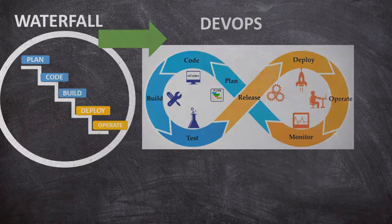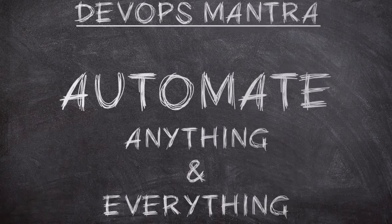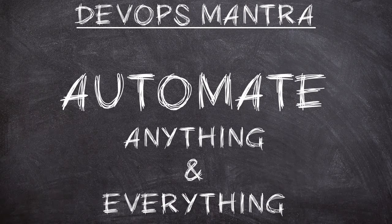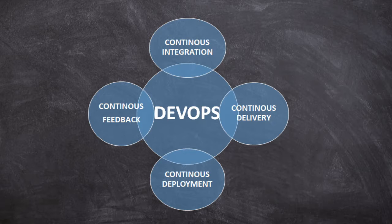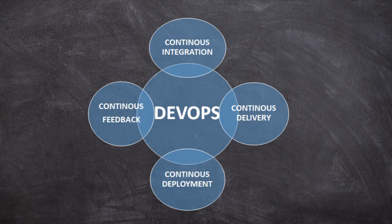DevOps mantra is simple. Automate anything and everything which helps in achieving continuous integration, continuous delivery, continuous deployment and continuous feedback.